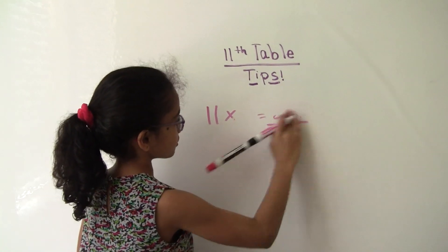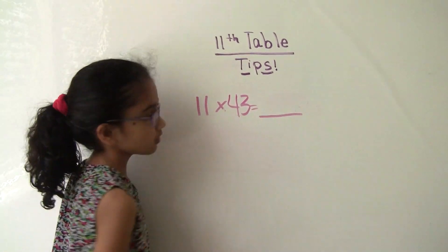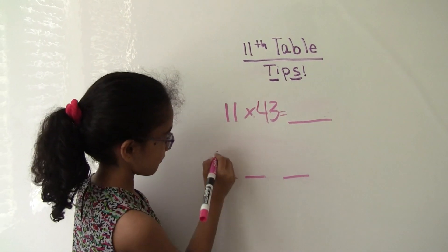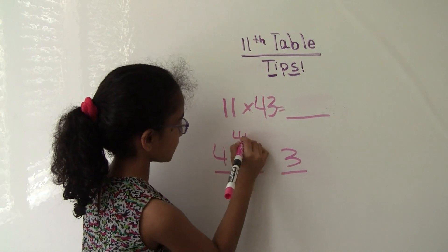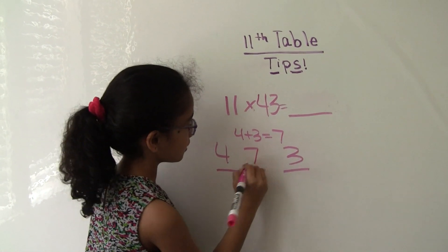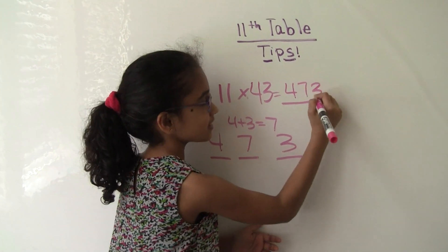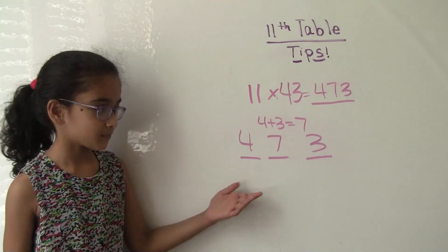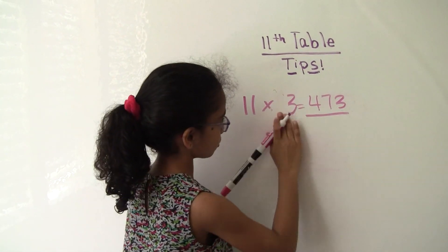So let's try 11 times 43. Okay, write your 3 here again. 4 and 3. 4 plus 3 equals 7. So your answer is 473. I'm going to give you some time again. Okay, let's come back here and try some higher numbers.